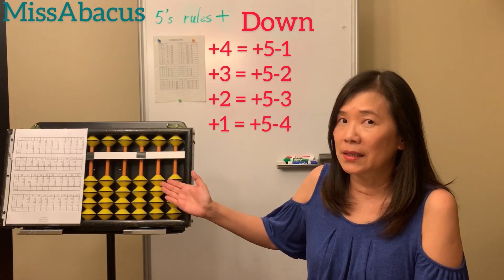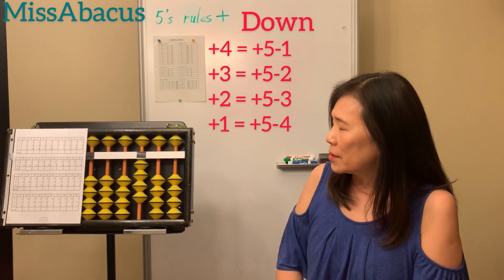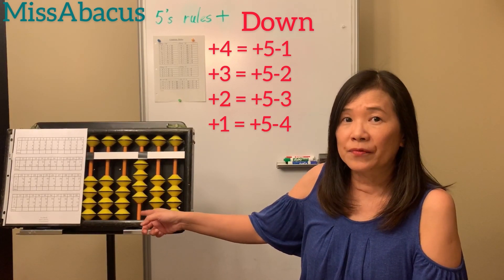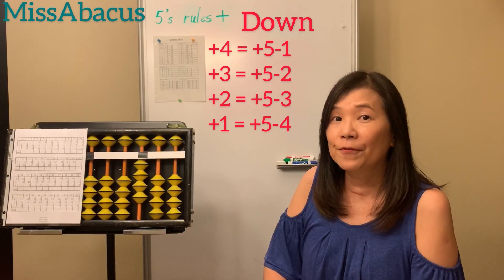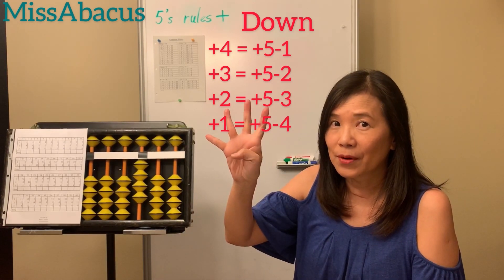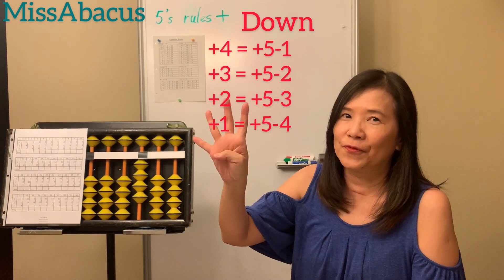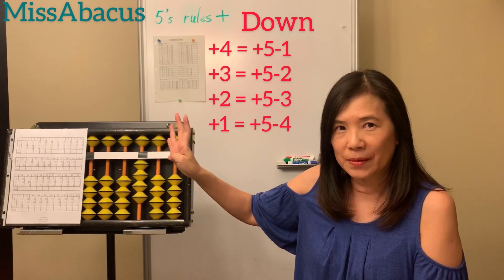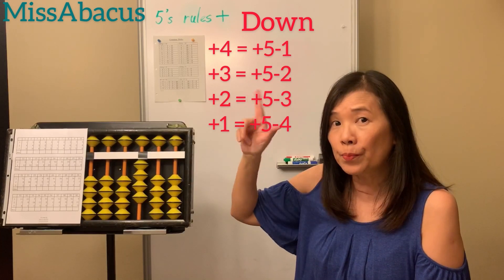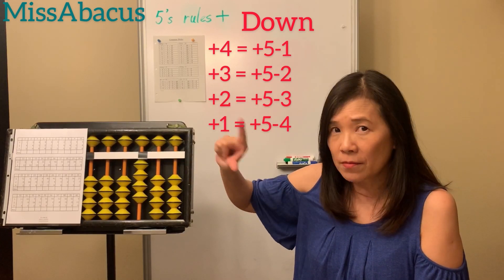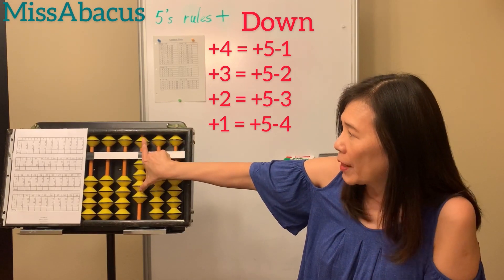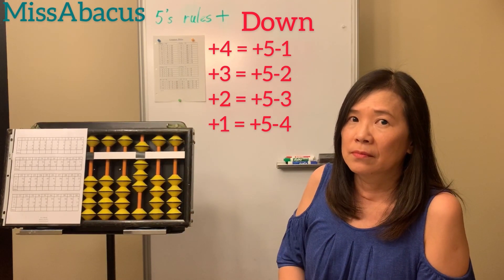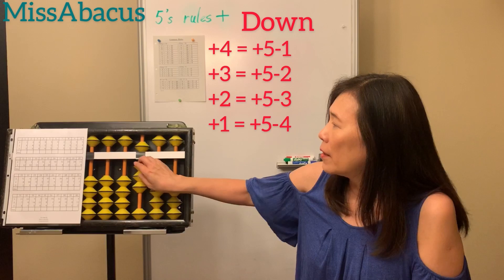Let me show you an example to explain the rules. Four plus four — because you don't have any beads left on the bottom but you have five. Five is greater than four by one, right? So five minus one is four. For this problem, how to plus four: we use five minus one, so we use both fingers — pointer and thumb together down. Five down, one down together — that's five minus one. So down one together, that's four.